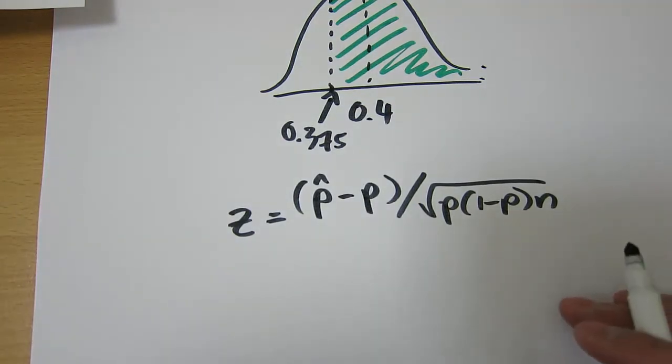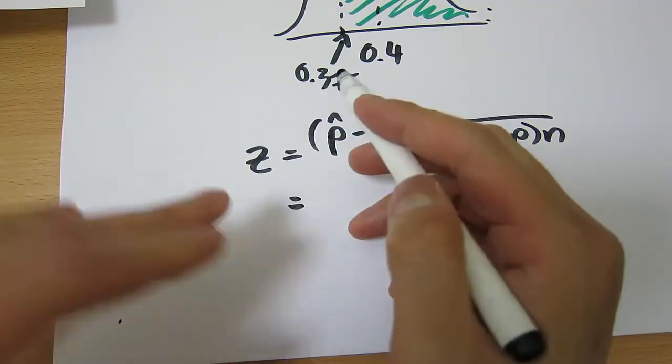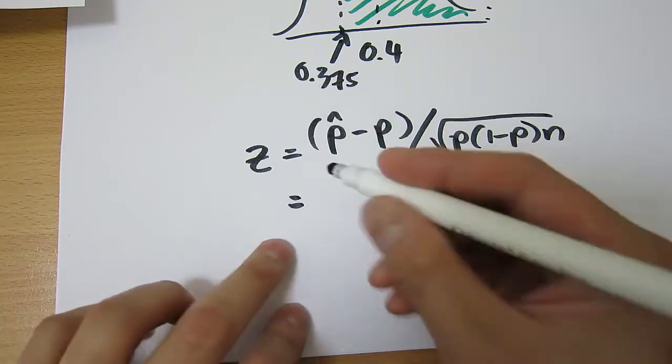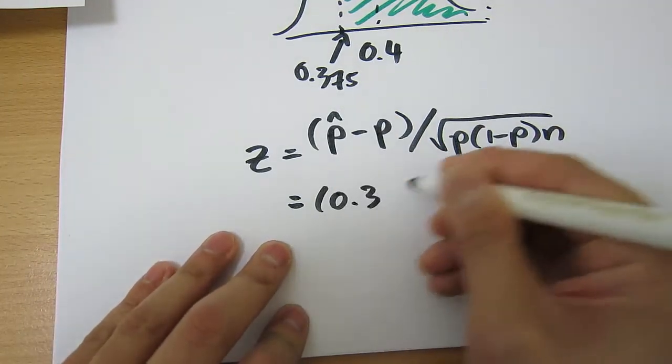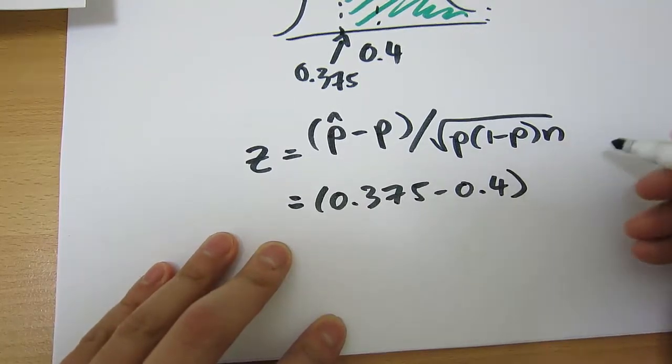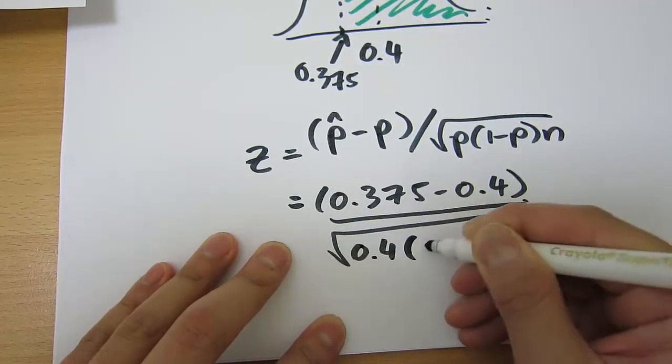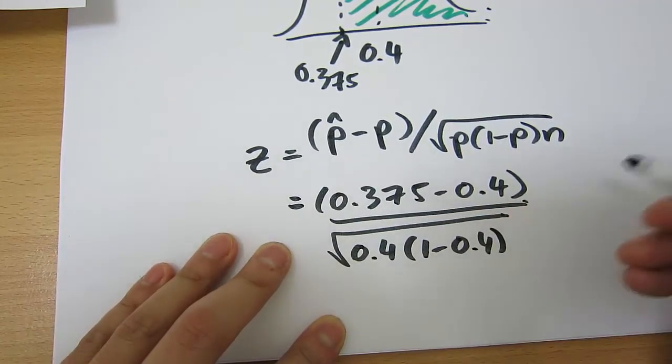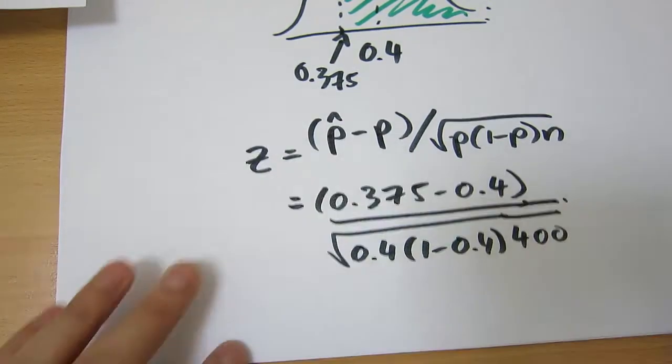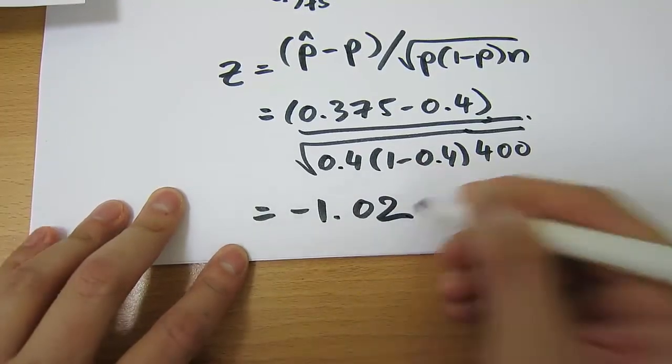So if we sub these numbers in, what do we get? We want to know if we sampled 400, what's the probability that our sample mean will be 0.375 minus 0.4, divided by the square root of 0.4 times (1 minus 0.4), and our sample size is 400, that's N. So we punch that in, you punch that into your calculator and you'll get negative 1.02.